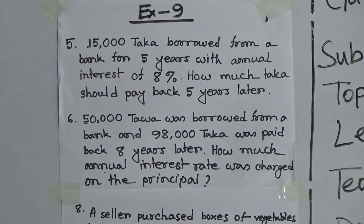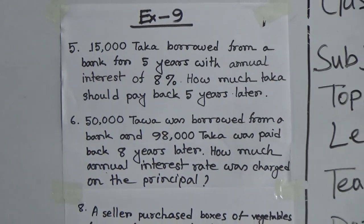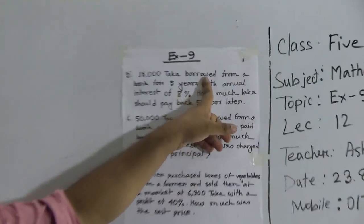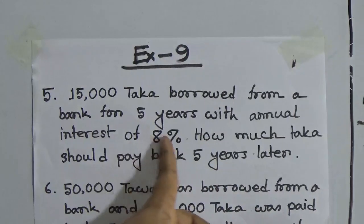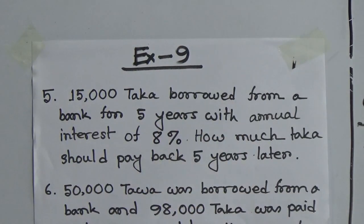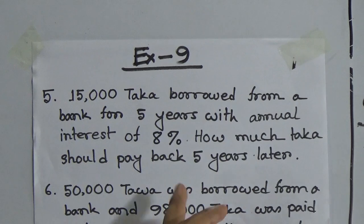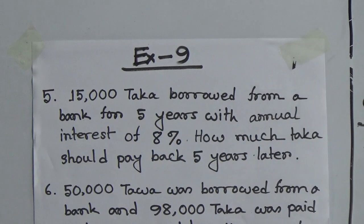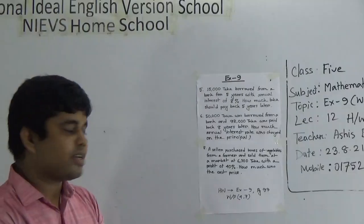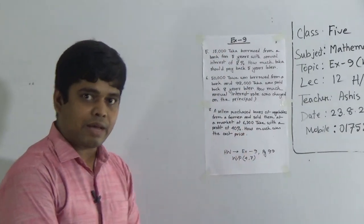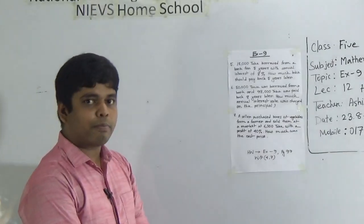The money that is borrowed or invested is called principal. Here 15,000 taka is borrowed from a bank — that means the principal is 15,000 taka. Time is 5 years and the rate of interest is 8%. After 5 years, he must pay back this 15,000 taka along with the simple interest. So at first we need to find the simple interest, then we add it to the principal to get the payable amount.